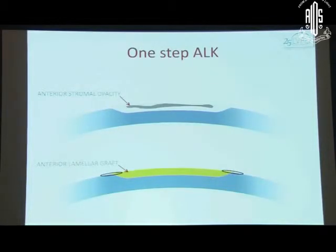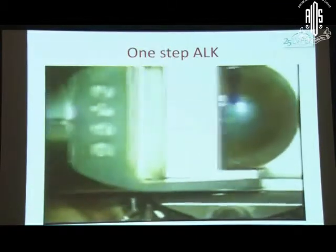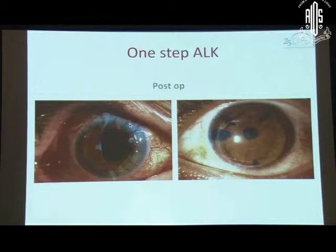To see why femtosecond anterior lamellar keratoplasty may be better than manual or automated ALK, let's go through the procedure of manual or automated ALK. Typically, ALK is done as a one-step procedure where you have a scar within the cornea, you take off a bit of the corneal stroma along with the scar, and replace it with an anterior lamellar graft. This graft needs to be sutured in place, just like a penetrating graft or a DALK, and results are usually pretty good.